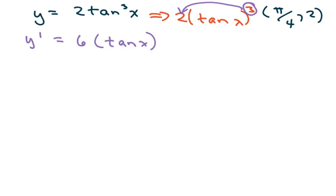And 3 minus 1 is 2. And the derivative of tan, you do your inner function, which is going to be secant squared of x.